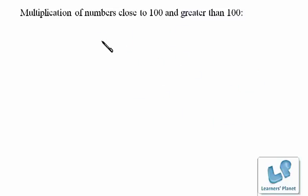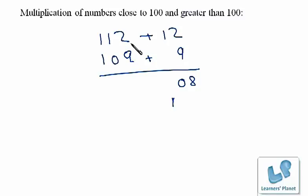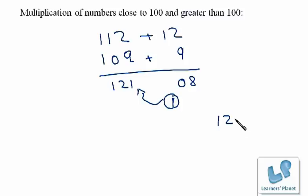Let's take one more example: multiply 112 with 109. This is plus 12 and this is plus 9. We multiply these to get 108, so we write 08 here and carry the 1 forward. Now we cross add: 112 plus 9 is 121, and we carry the 1 forward to get 122. So the product of 112 and 109 is 12208.